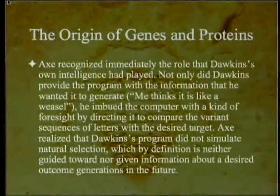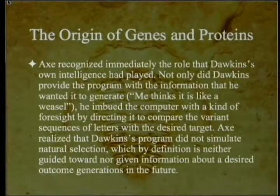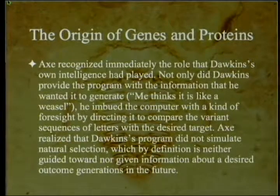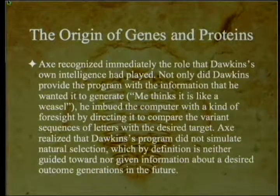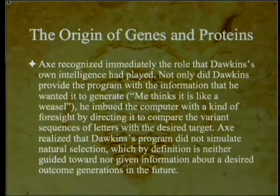The program then generated variant versions of newly selected strings, comparing those to the target and selecting the closest match, eventually generating after many iterations a string that matched perfectly — perhaps 43 generations at shortest, possibly a hundred or more, but not the millions and billions of generations expected if typing from scratch. Dawkins' point was that if you can gradually keep things going along a pathway, you dramatically shorten the time needed to get from one point to another.